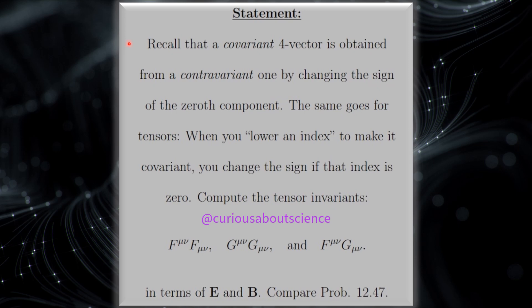So the statement reads, recall that a covariant 4-vector is obtained from a contravariant one by changing the sign of the zeroth component. The same goes for tensors. When you lower an index to make it covariant, you change the sign if that index is zero. Compute the tensor invariants.